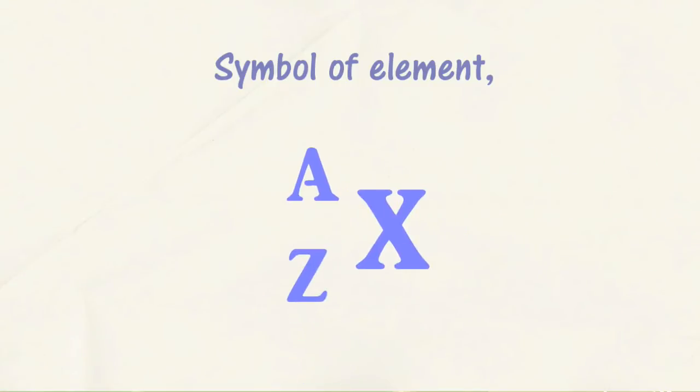A symbol of an element is the chemical symbol, written in short form, to represent a particular element. The first letter of a symbol is written in capital letter. The second letter is written in small letter.